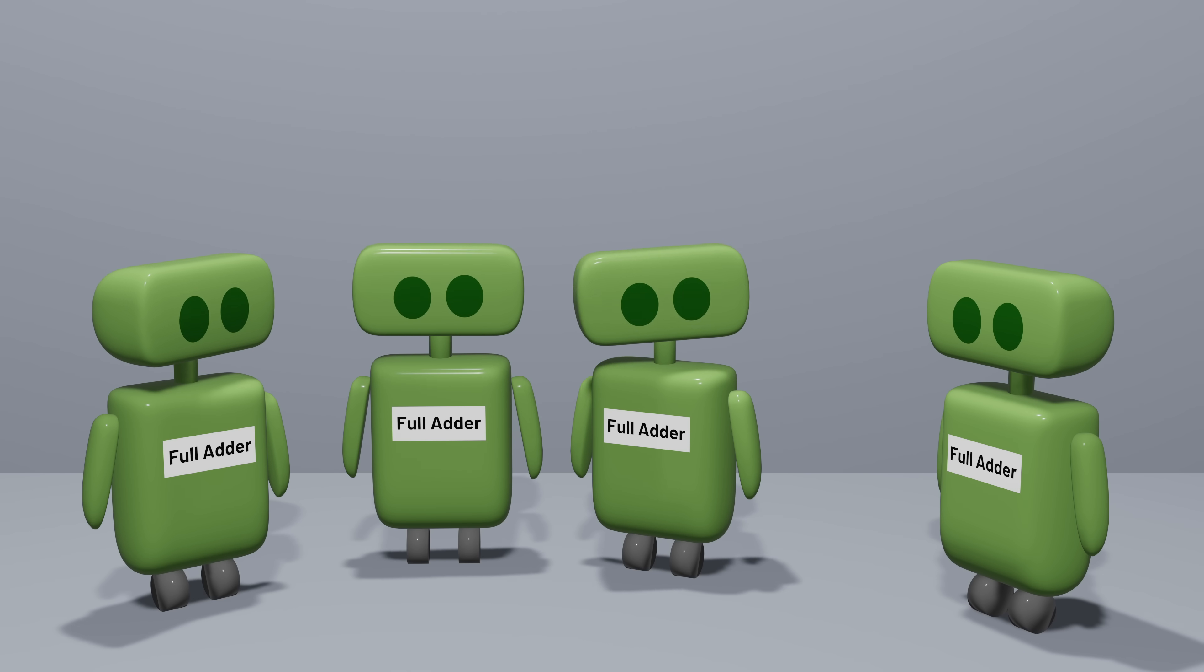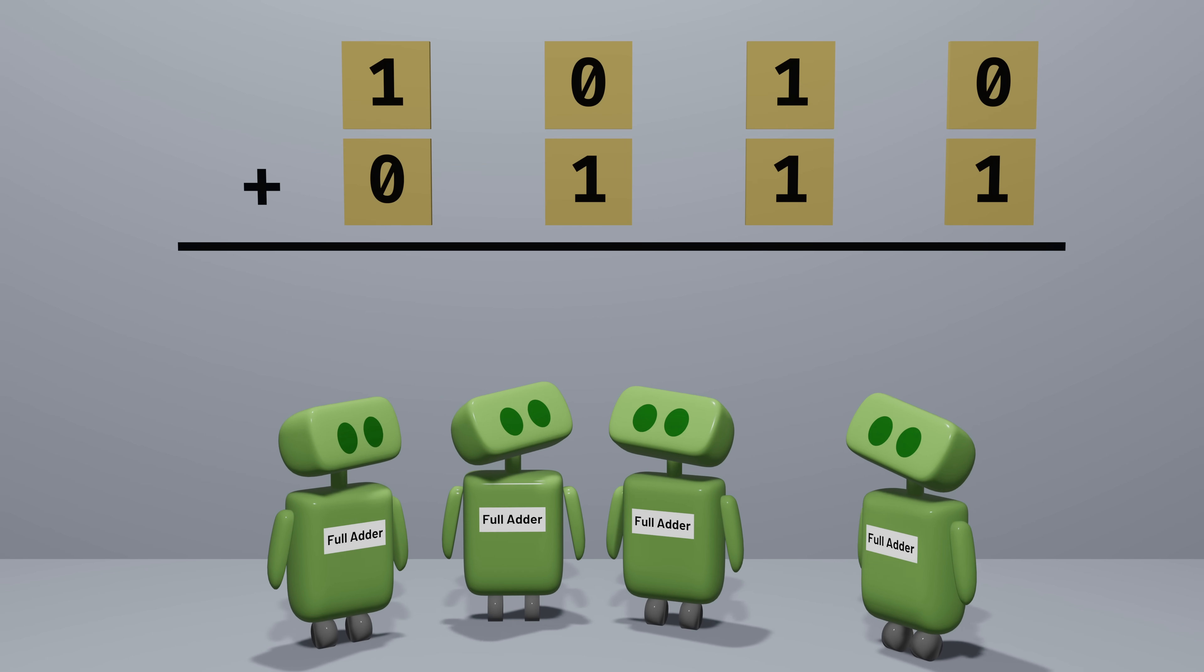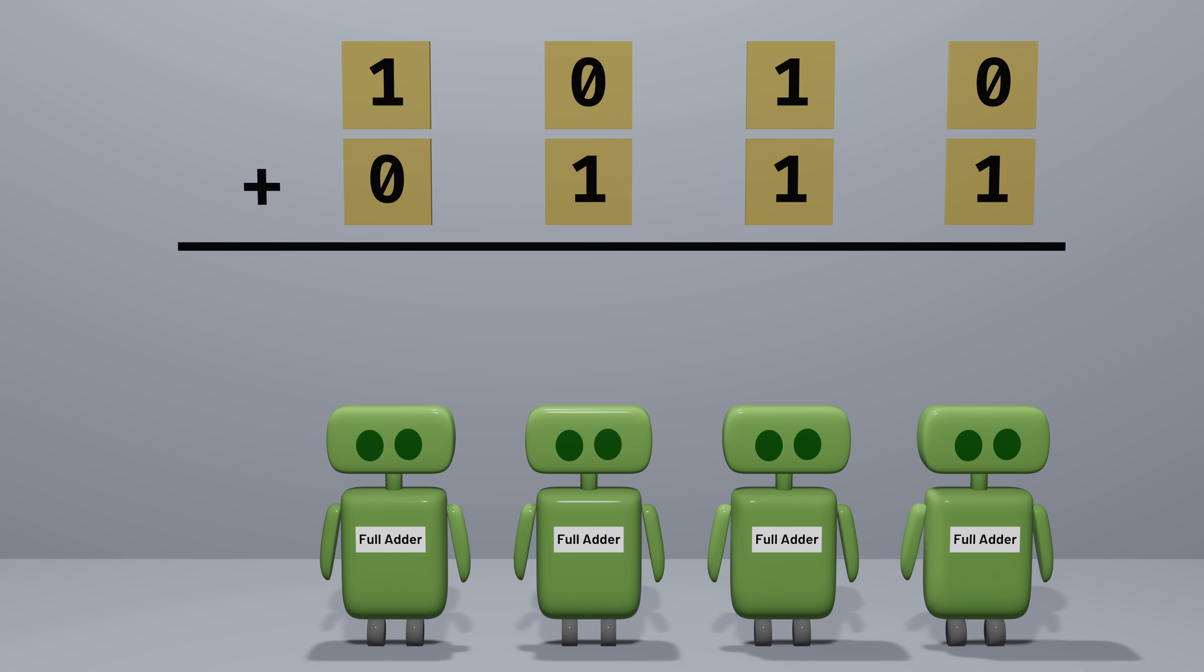We can combine them to add larger numbers. To add two 4-bit numbers together, we can chain together four full adders into a ripple carry adder. The first full adder adds the rightmost bits and produces a sum. It also passes on a carry bit to the next full adder, which computes a sum and passes on a possible carry bit to the adder after that. By chaining together enough of these single-bit adders, we can design circuits that add numbers as large as we'd like. But as the numbers we add get larger, you'll notice that the addition takes longer and longer.